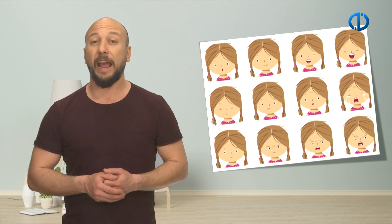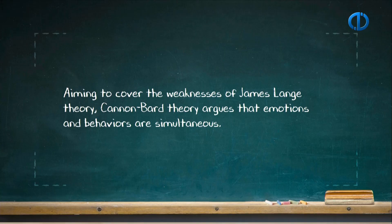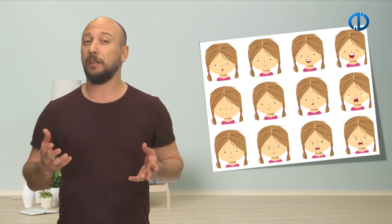According to the theory developed by William James and Carl Lange, the body reacts to nearby events and when this reaction is noticed, an emotion occurs accompanied by these physiological changes. Aiming to cover the weaknesses of the James-Lange theory, Cannon-Bard theory argues that emotions and behaviors are simultaneous. Where there is any kind of stimulant nearby, the thalamus is activated. While the nerve system is stimulated to induce physiological changes, a signal is sent to the cortex that starts the process of being aware of emotion-related experience.